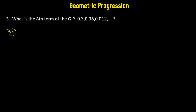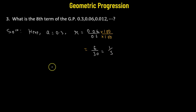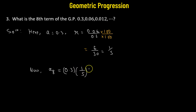Problem number three: we need to obtain the eighth term of the geometric progression. The first term a equals 0.3. The common ratio is 0.06 divided by 0.3; multiplying numerator and denominator by 100 gives 6 over 30, which simplifies to 1 over 5. The eighth term is 0.3 multiplied by 1 over 5 raised to the power of 7 — this is the eighth term of the given geometric progression.